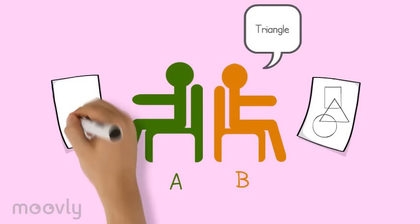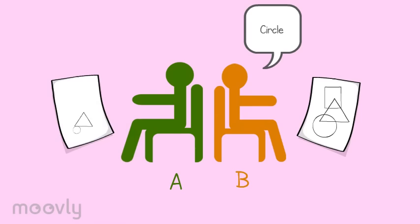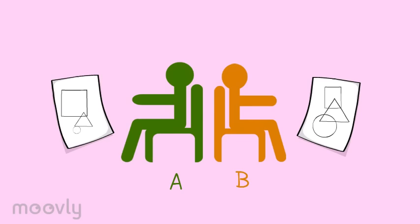For example: first, draw a medium sized triangle in the middle of the paper. Next, draw a circle on the bottom left of the triangle, slightly touching it. Lastly, draw a rectangle that intersects with the top of the triangle.